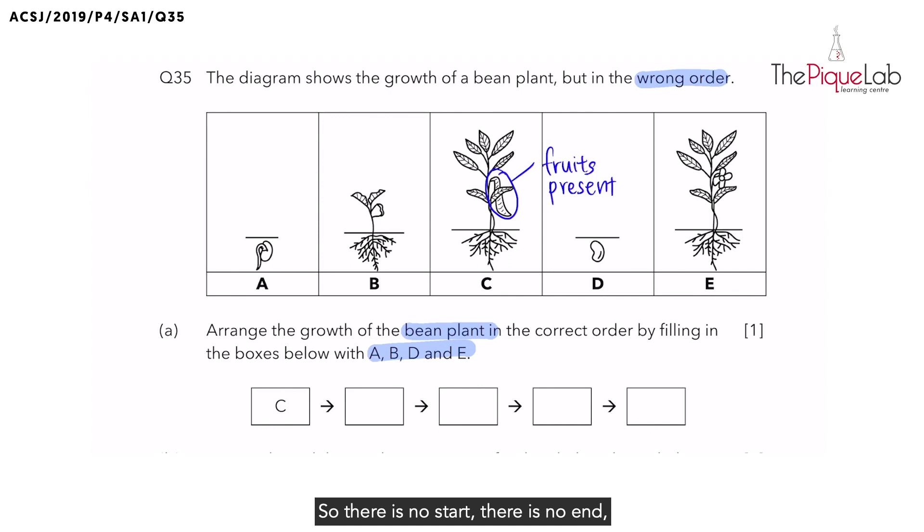So there is no start, there is no end, but there is a correct sequence or correct order. So let's write this here to remind ourselves: a cycle repeats itself.